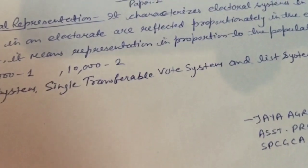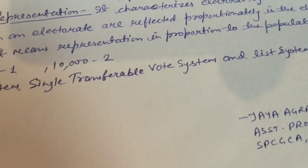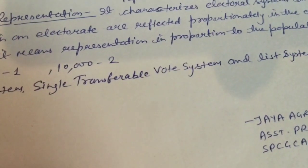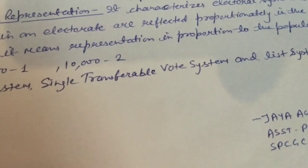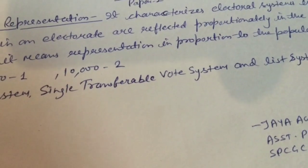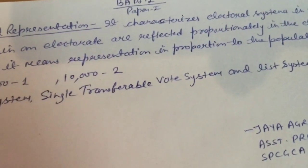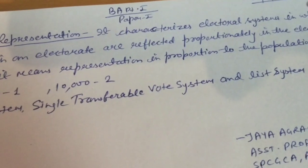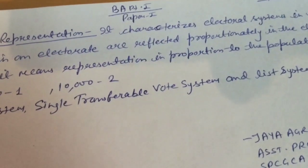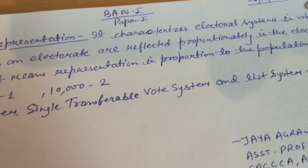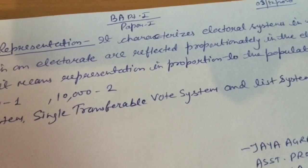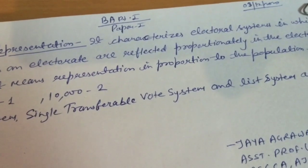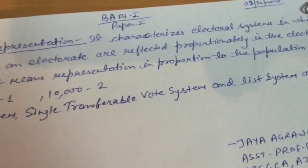There should be a multi-member constituency for this system. Every voter marks the figures 1, 2, 3, 4 against the names of the candidates, indicating his preferences. He can vote for as many candidates by denoting his preference as there are seats to be filled from the constituency. For example, if 12 members are to be elected from a constituency and there are 20 candidates, the voter can indicate his preference from 1st to 12th.